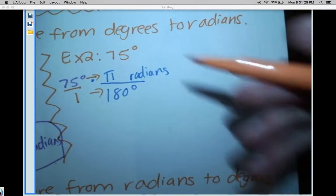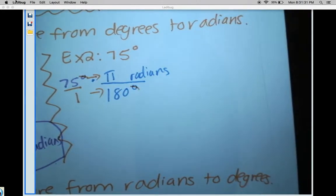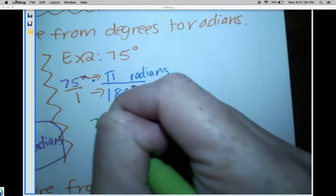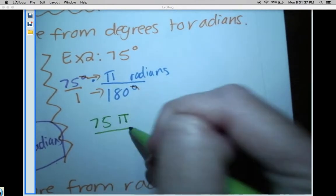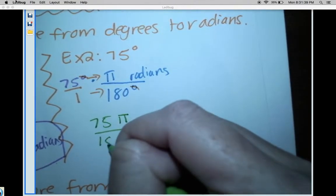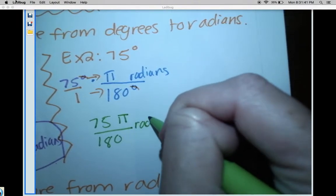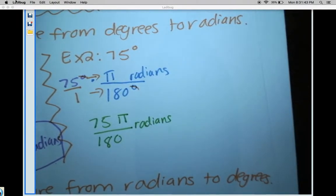I'm gonna cancel those out. So 75 times π will give me 75π over 1 times 180, which is 180 radians. My degrees cancel out, so I'm currently in radians, but I need to simplify this fraction down. I need to think about a number that divides into 75 and 180.